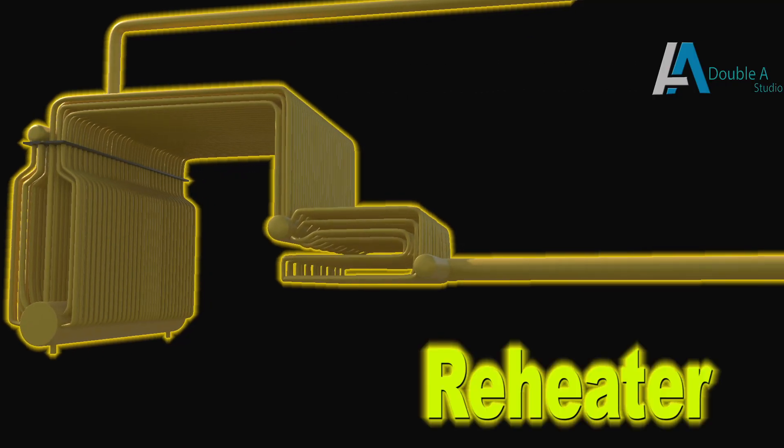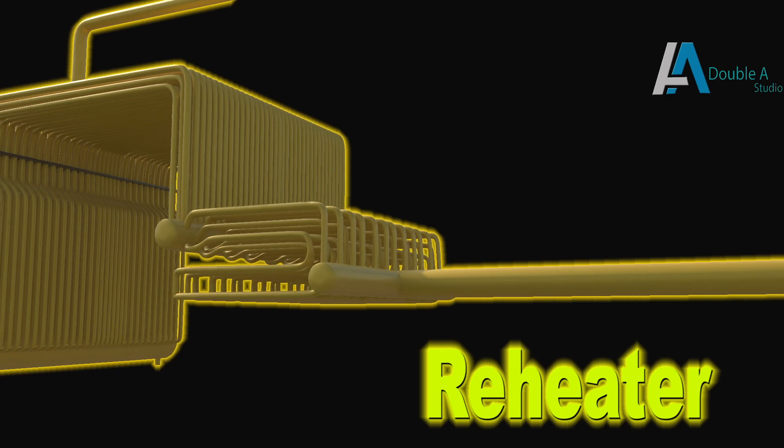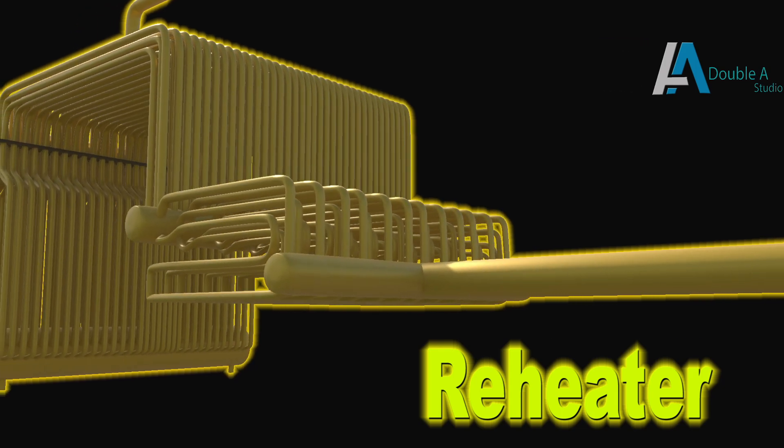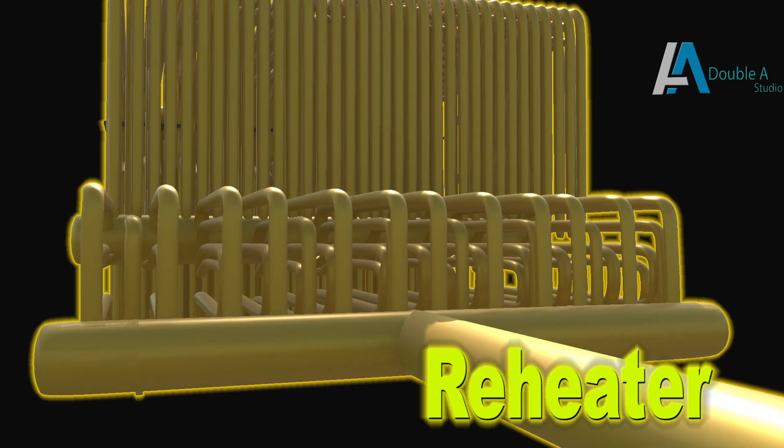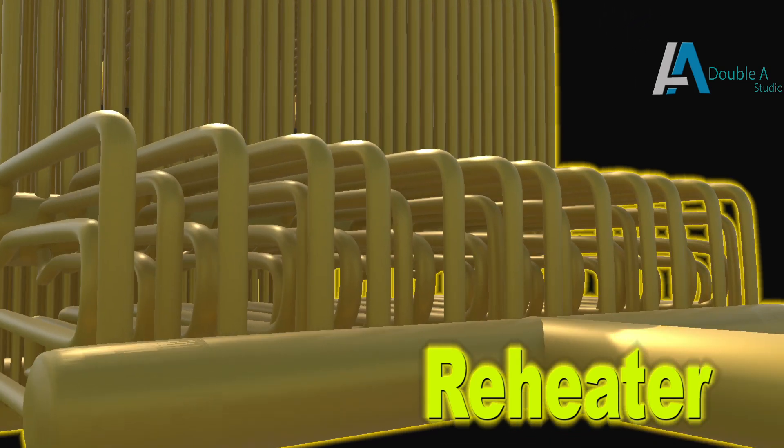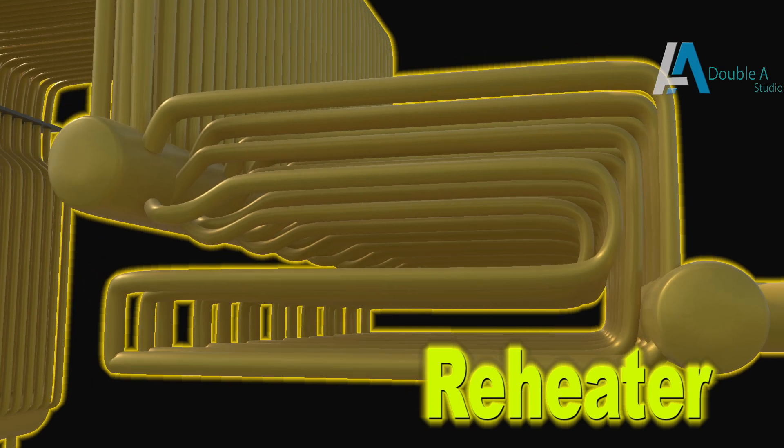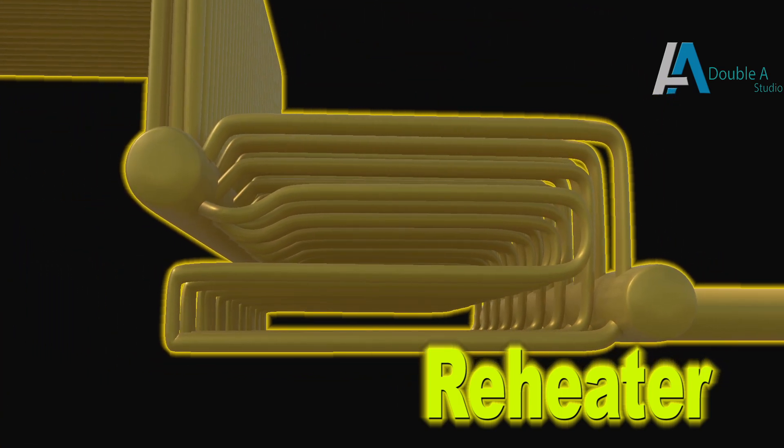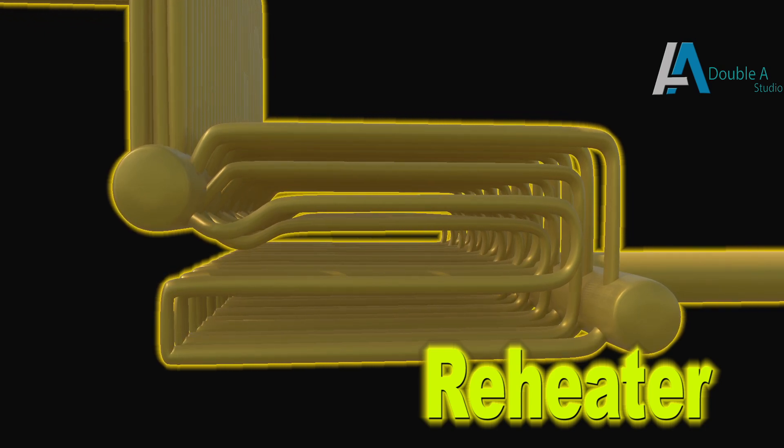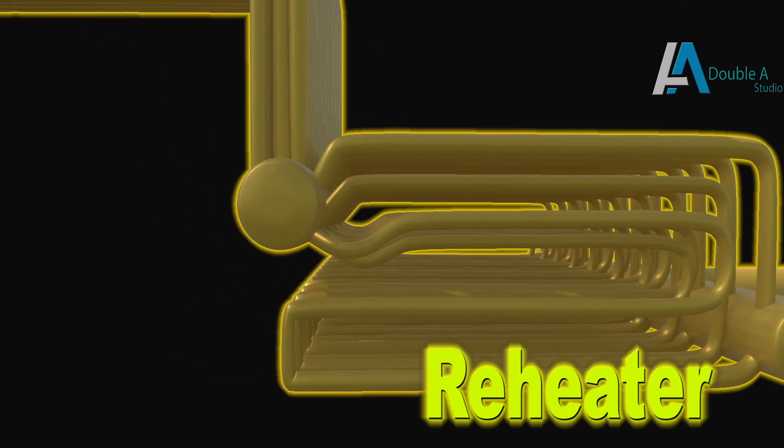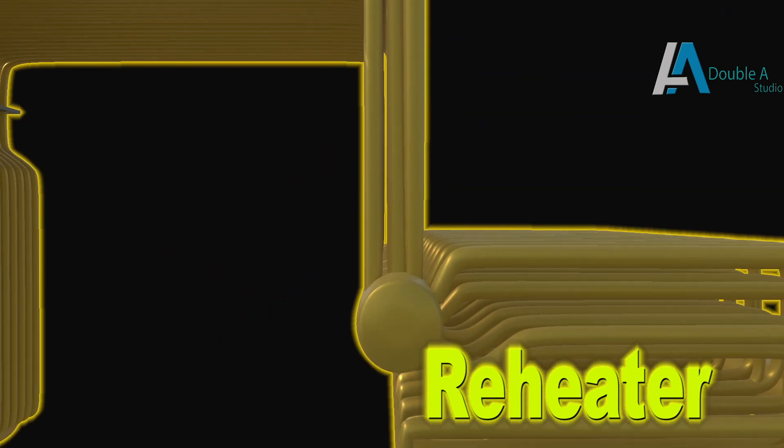First comes the reheater which is again a tubular heat exchanger. Its function is to reheat steam coming out of the HP turbine. Reheater increases temperature of the steam and reheated steam is sent to the intermediate and then lower pressure turbine for further expansion and work.